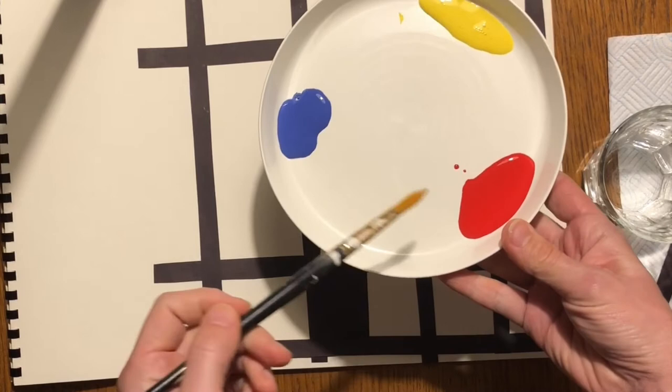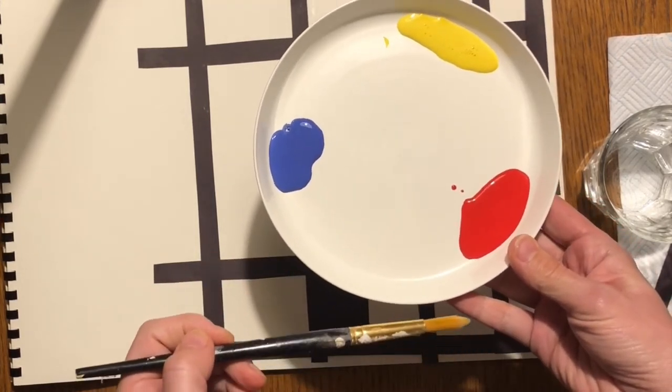Mondrian used these colours—red, blue, and yellow—but we're going to use secondary colours.